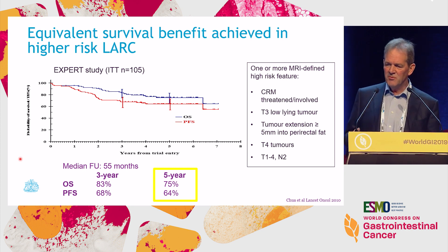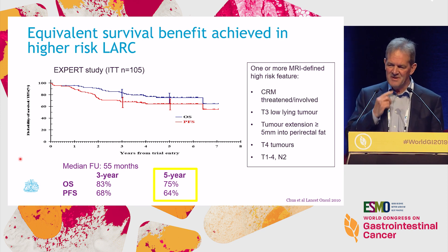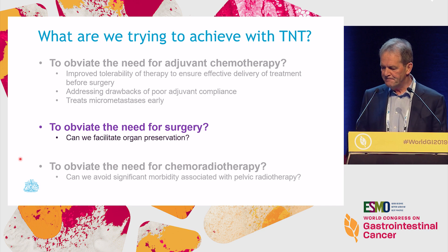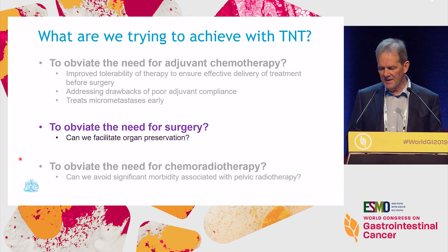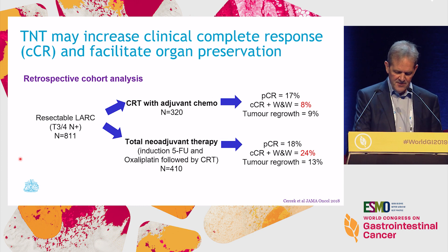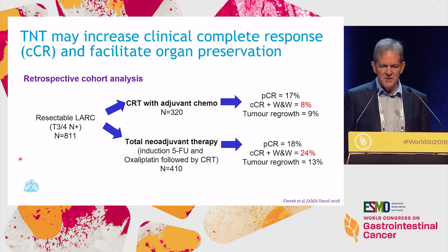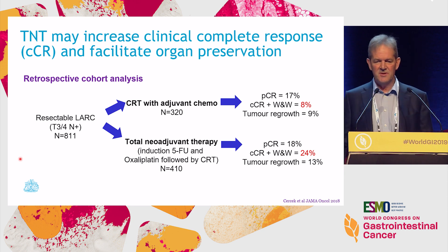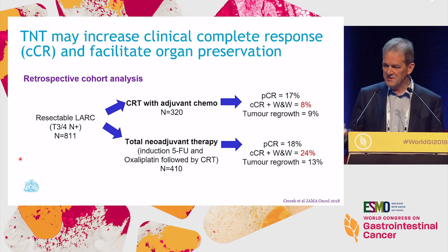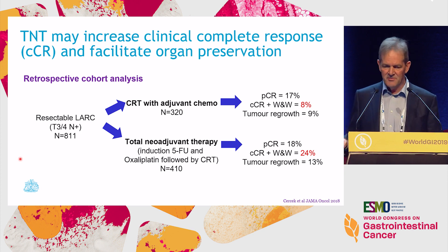We stopped doing neoadjuvant chemo when these trials ended because I became less convinced that this was the way to go — just treating everybody like this. But if you think about obviating the need for surgery, organ preservation in this disease is crucial. One of the big drivers of organ preservation has been the patients themselves. They don't want to have the rectum removed — they don't want to end up with a permanent stoma.